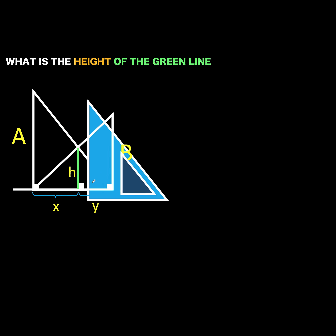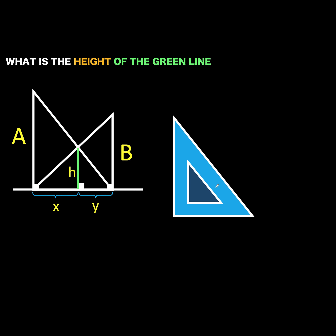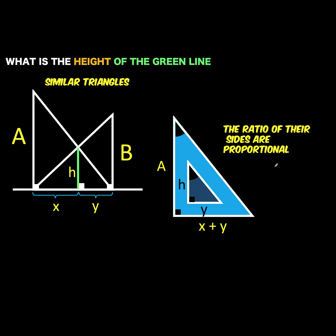Let's analyze these two similar triangles. Here are their dimensions: the base is x plus y and the height is a for the larger triangle; for the smaller right triangle, the height is h and the base is y. When two triangles are similar, the ratio of their sides are proportional. Therefore, the ratio of the base to height of the bigger triangle is (x + y) over a, which equals the ratio of the base to height of the smaller triangle, which is y over h. Let's remember this equation.